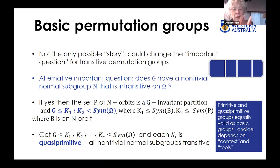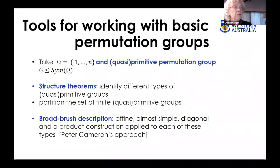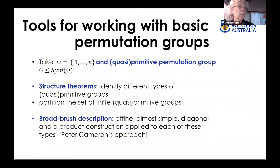There are tools for working with these basic permutation groups, whether primitive or quasi-primitive. We have structure theorems that identify different types. A broad-brush description — first used by Peter Cameron — partitions these basic groups into affine ones, almost simple ones, diagonal ones, and then those arising from some kind of product construction. This gives a pretty good feeling but covers over a few questions.